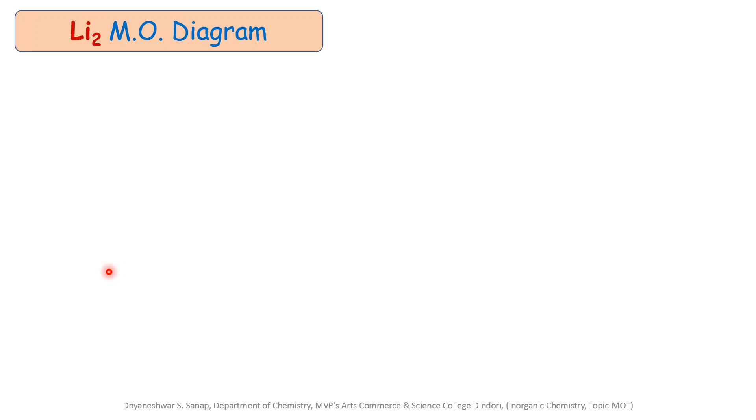First one is the Li2 molecular orbital energy level diagram. Li2 molecule is made up of two lithium atoms. To understand the Li2 molecular orbital energy level diagram, we have to first of all write the electronic configuration for each lithium atom. The electronic configuration for the first lithium atom is 1s² and 2s¹.